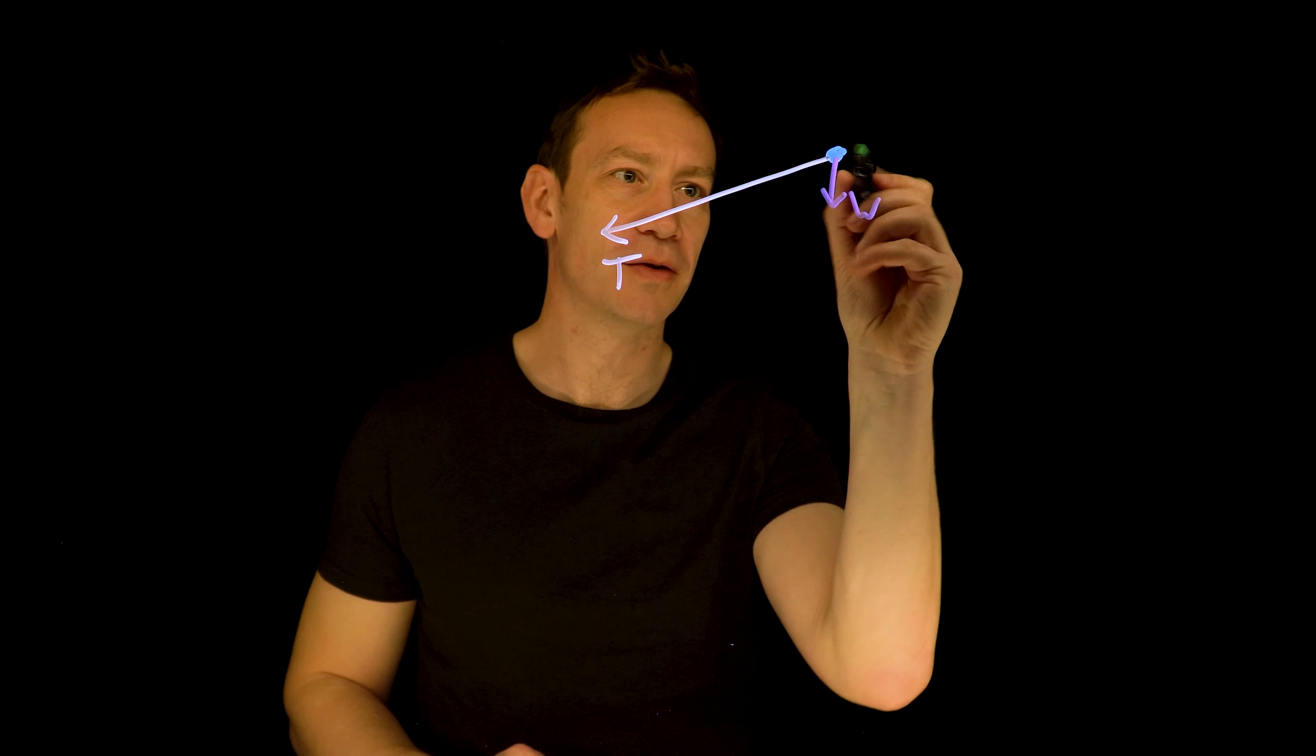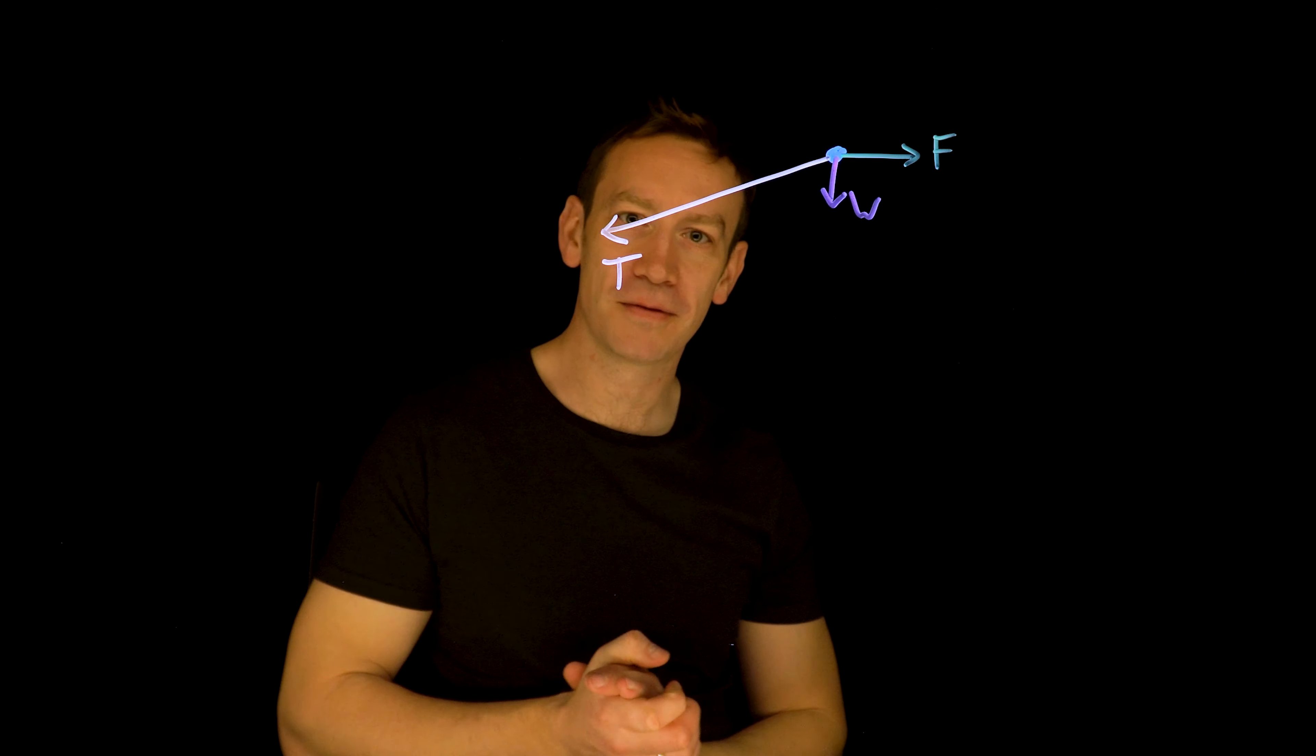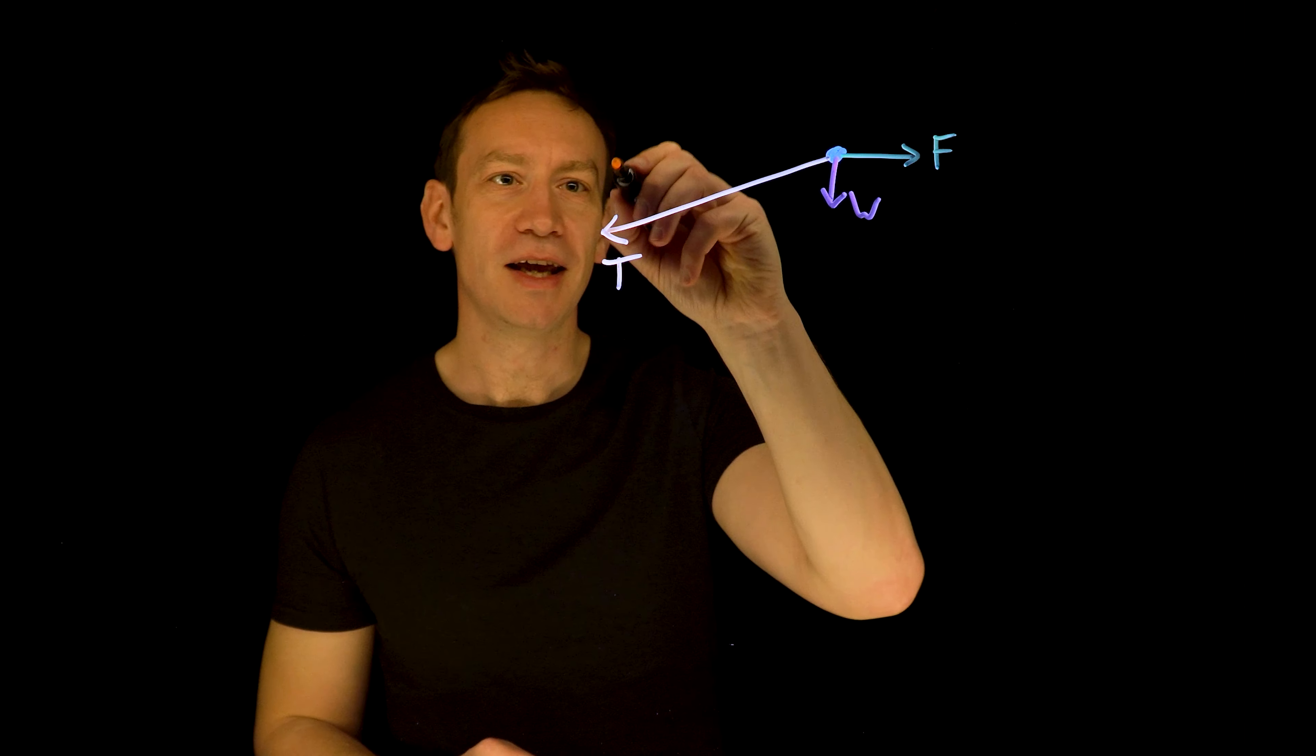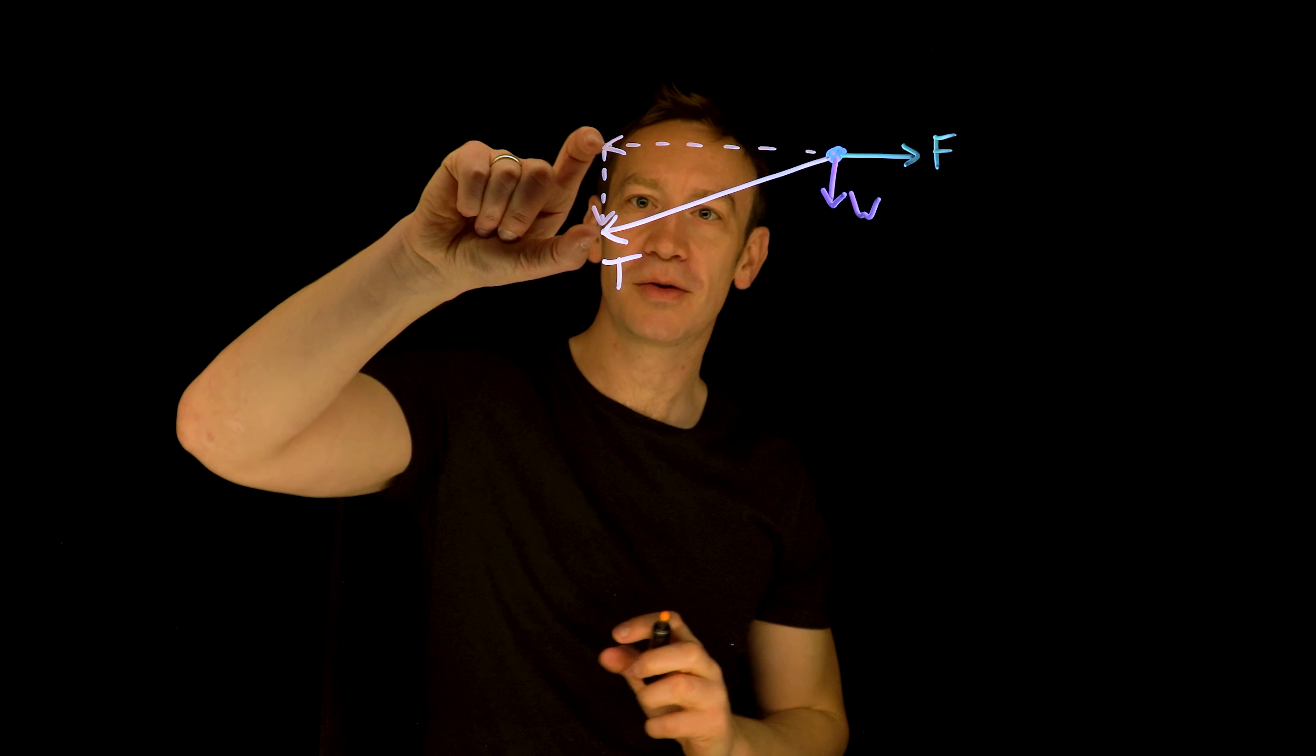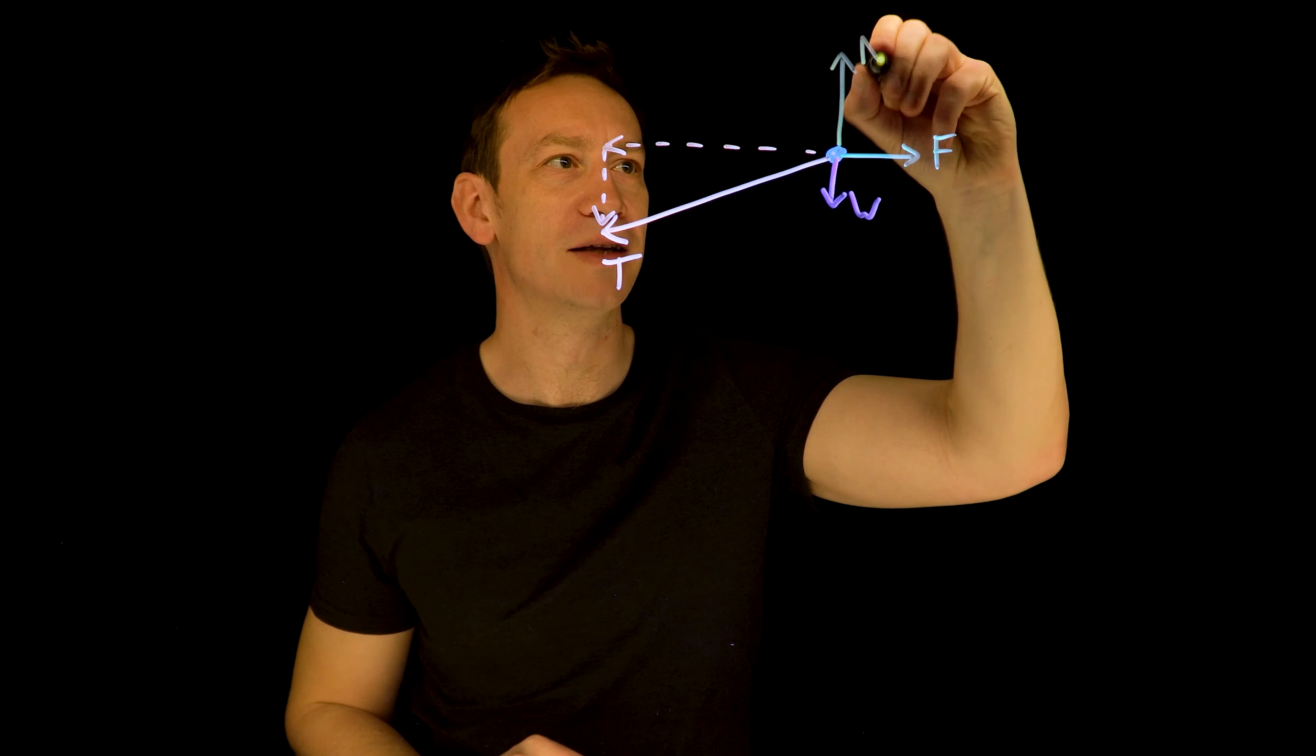And it's going to be a frictional force in this direction between the block and the table. Now the other force is a normal contact force, and that's caused by the table pushing up on the block, and the size of that isn't equal to the weight. And the reason for that is that this tension force has a horizontal component, and there's also a vertical component of tension. And the vertical component of tension added to the weight is equal to our normal contact force, and I'm going to call that N.